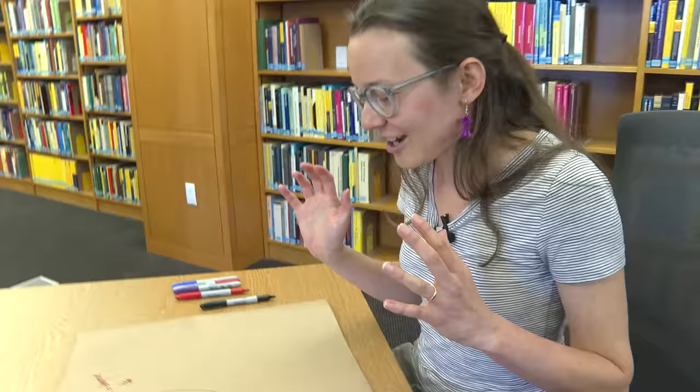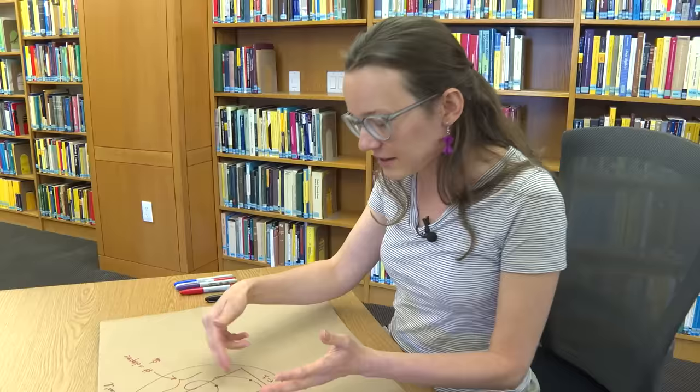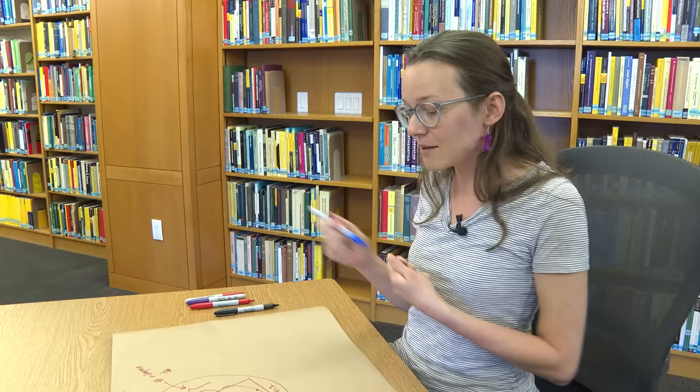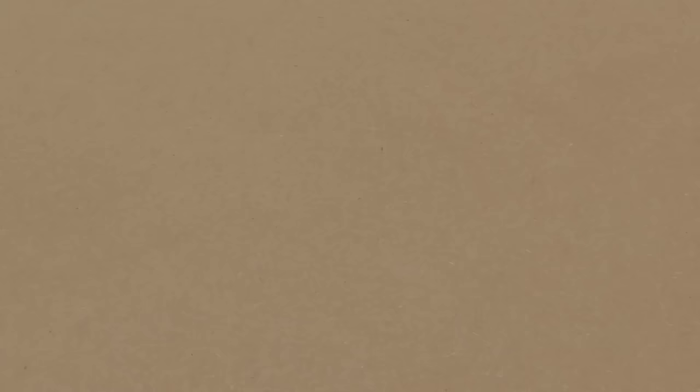And then there's one more secret hidden invariant that you can't see from these pictures and that's that really we should be working over the complex numbers. If you think about from the fundamental theorem of algebra, these curves, they come from solutions of polynomial equations. So really we should be thinking over the complex numbers. And if I think about what this curve is over the complex numbers, it actually looks like a surface because the complex numbers have two real dimensions.